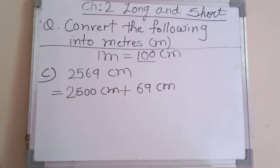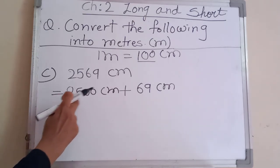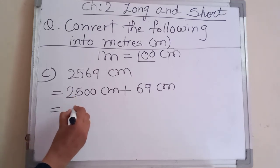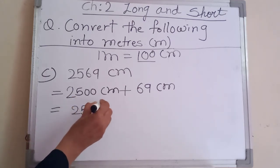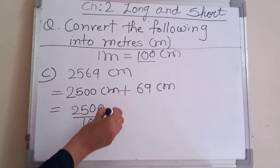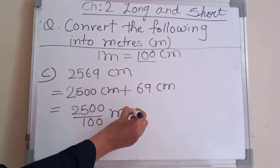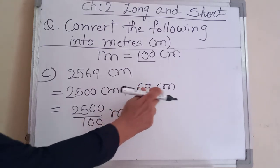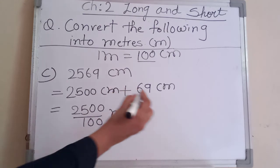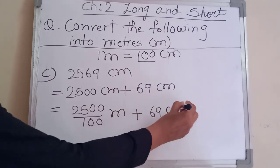Now write the equal to sign and proceed. Twenty five hundred centimeter divided by hundred — we can divide now. Immediately write meter after dividing. Then plus sixty nine centimeter, which is less than hundred, so there is no need to convert it. It stays as sixty nine centimeter.